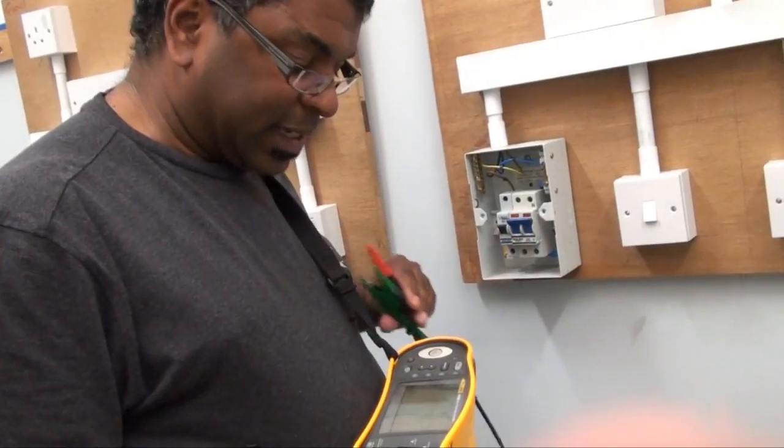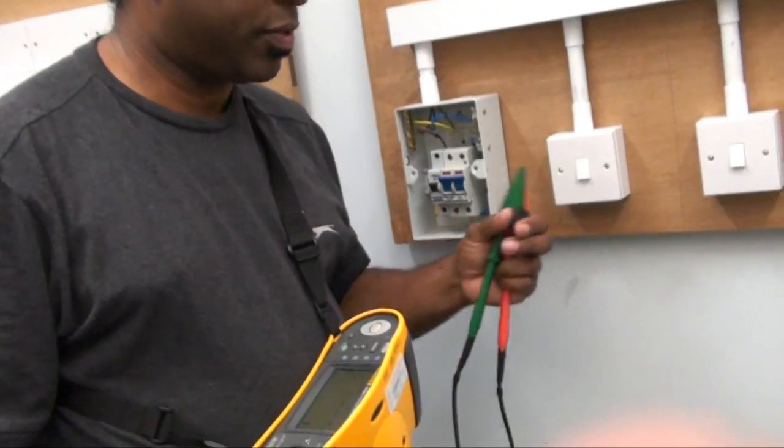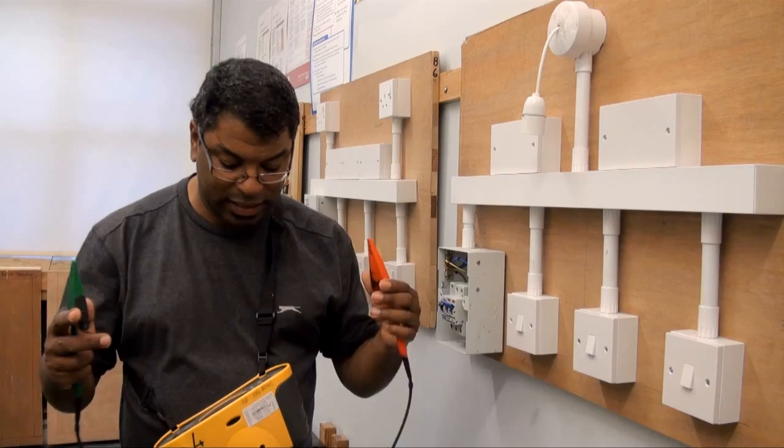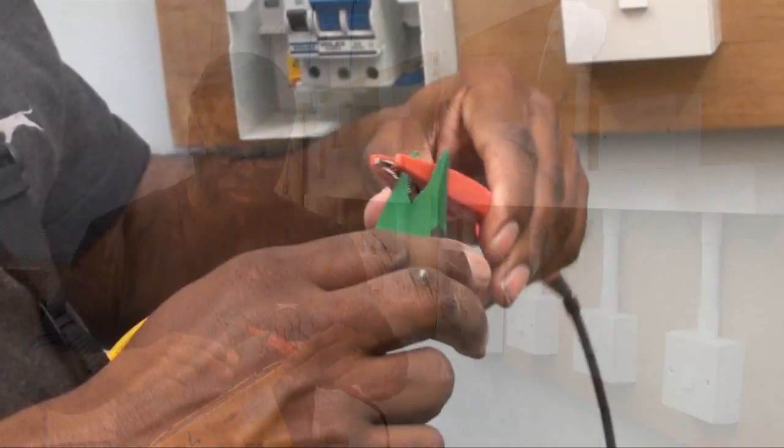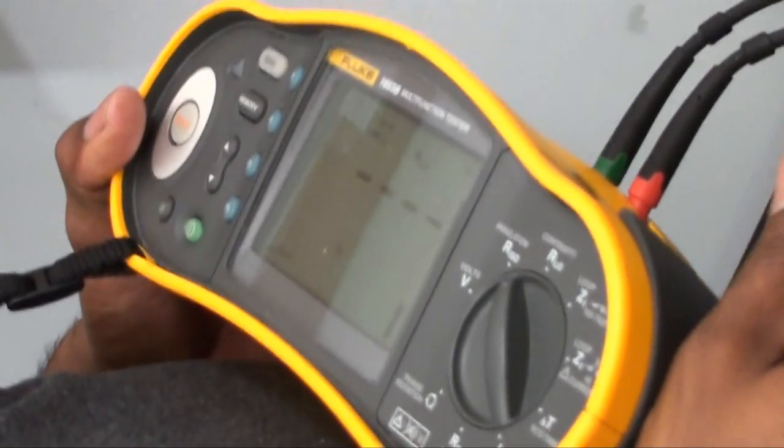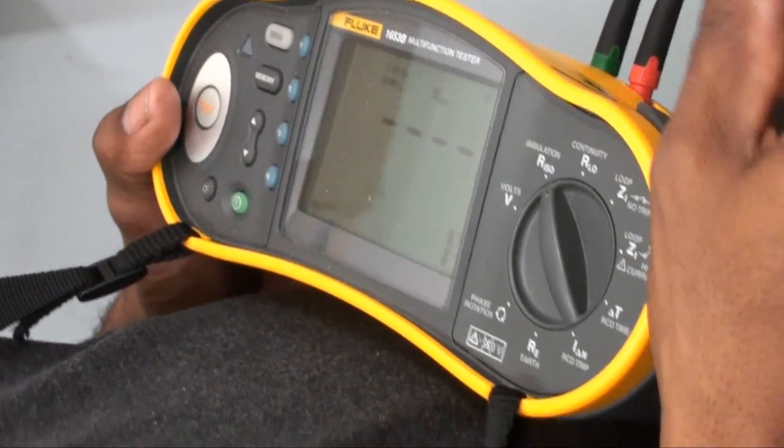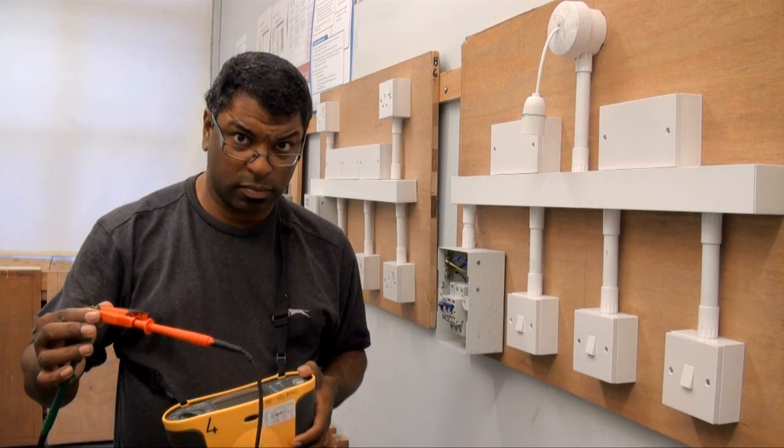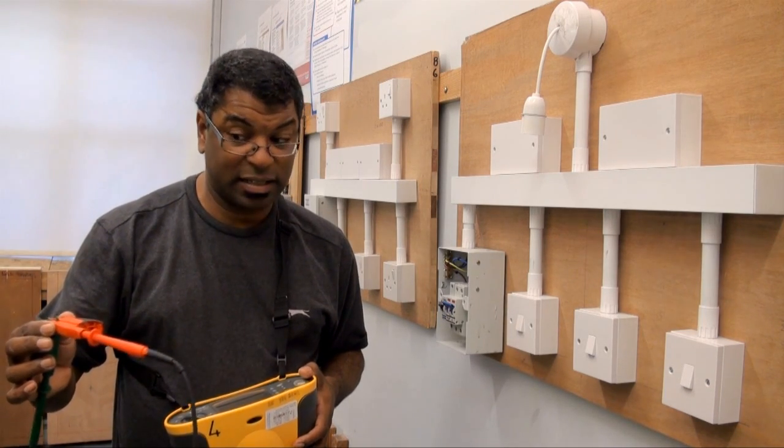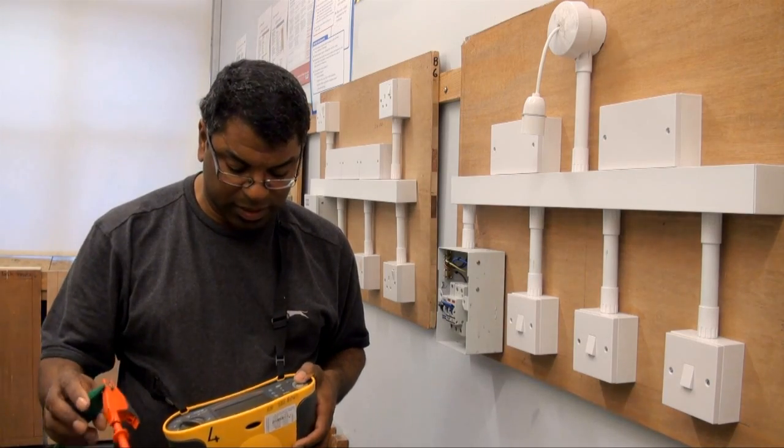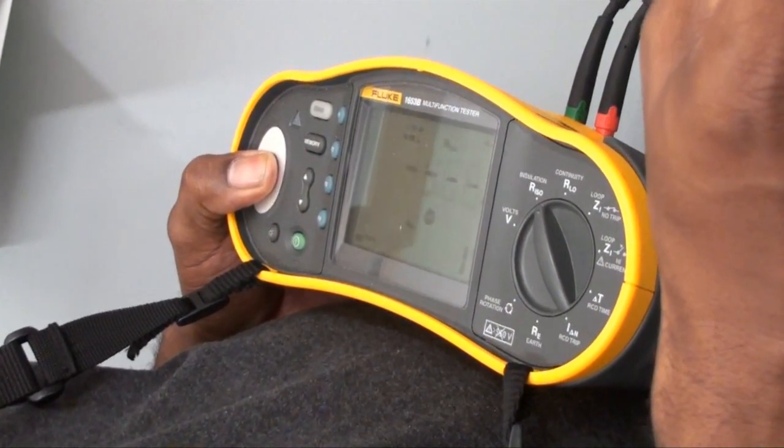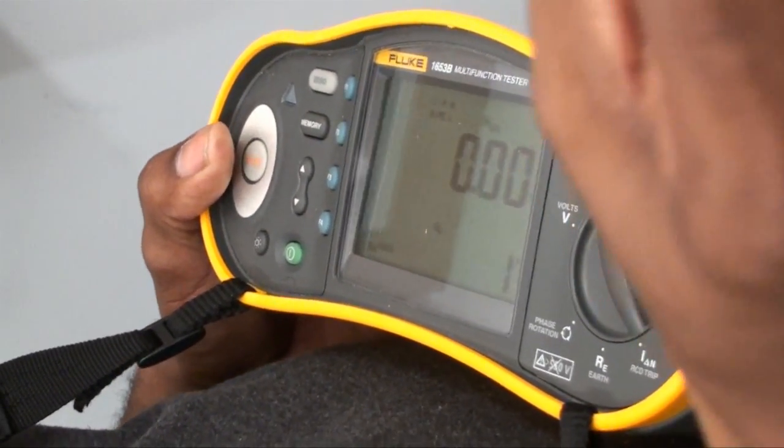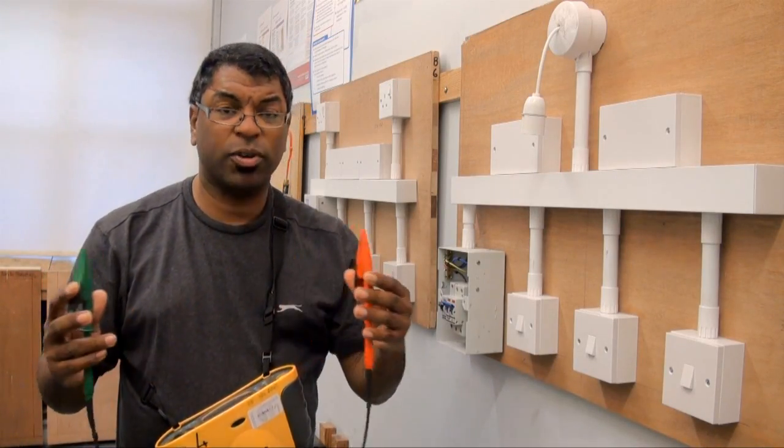Now as with any tester we just want to make sure that the tester is okay, and so it's always standard practice to test your tester. Now I'm going to make a circuit here. I've already set my meter to the correct settings and I should know what meter reading I'm going to get here. I should be getting 0.00, so I'm going to press my tester.